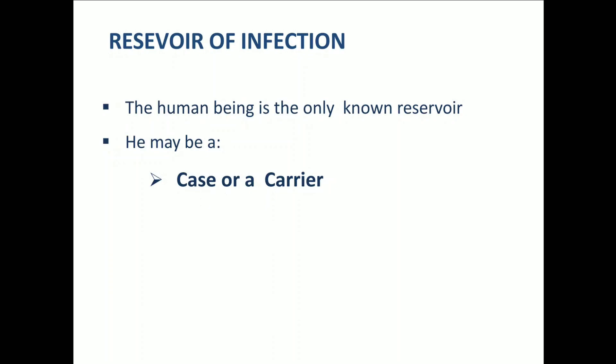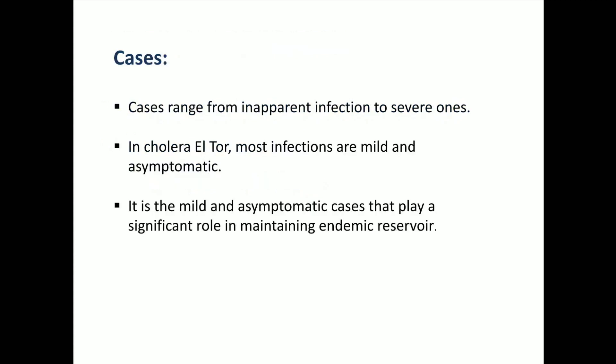Coming to the reservoir of infection: the human being is the only known reservoir. He may be a case or he may be a carrier. Cases range from inapparent infection to severe ones. In cholera due to El Tor Vibrio cholerae, most infections are mild and asymptomatic, while classical cholera may be more severe. The mild and asymptomatic cases play a significant role in maintaining the endemic reservoir, as these people are able to infect other persons very easily.